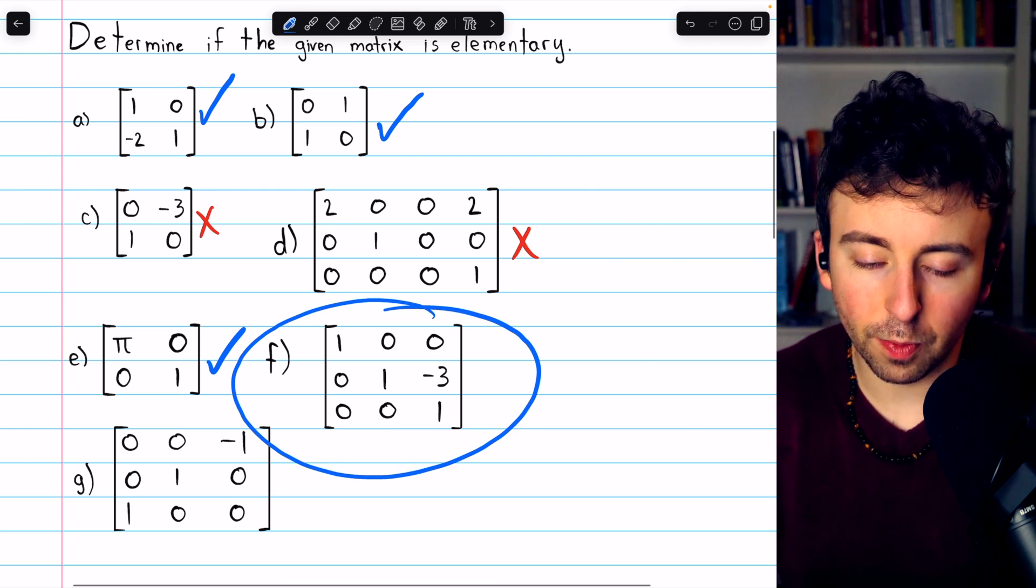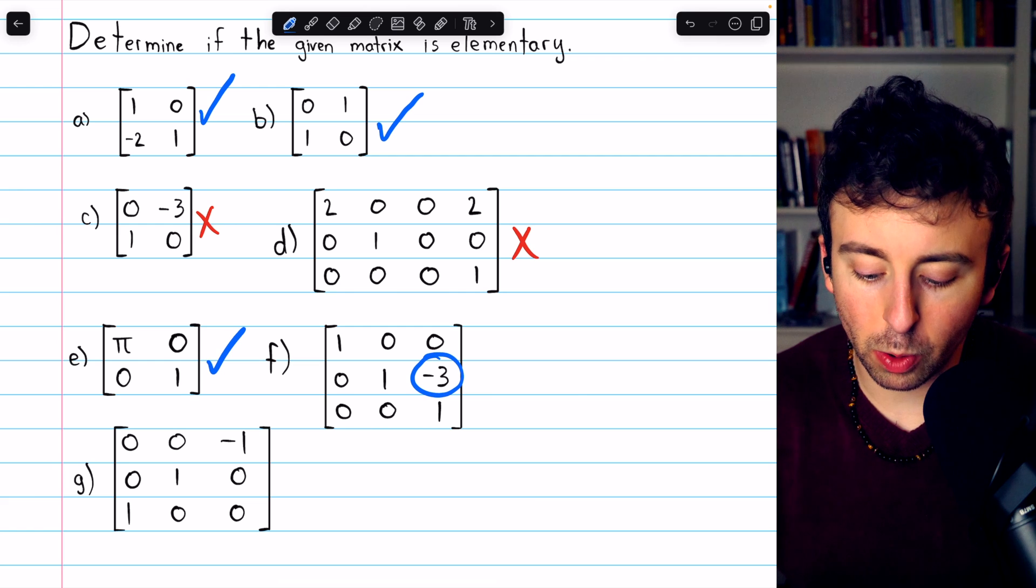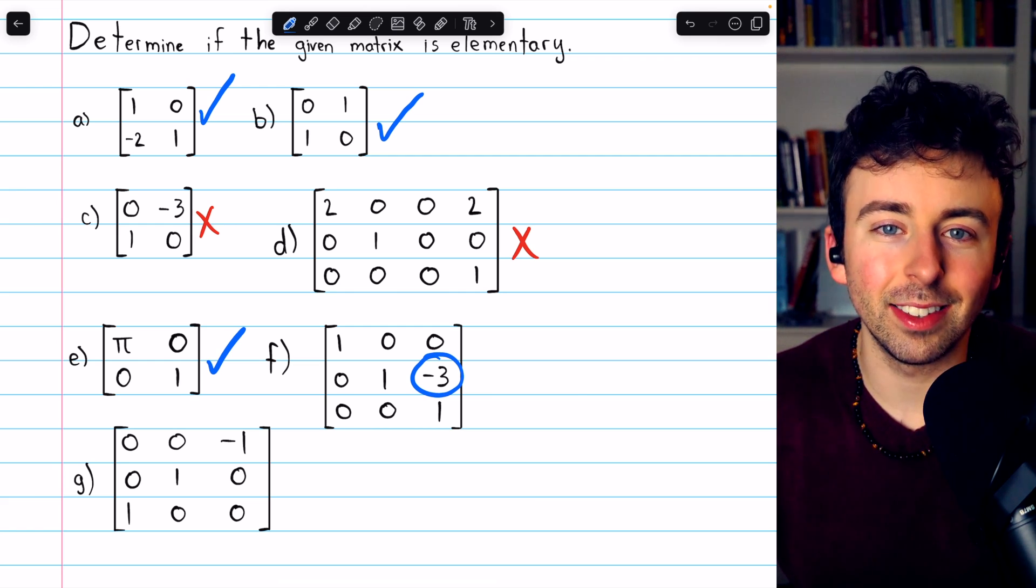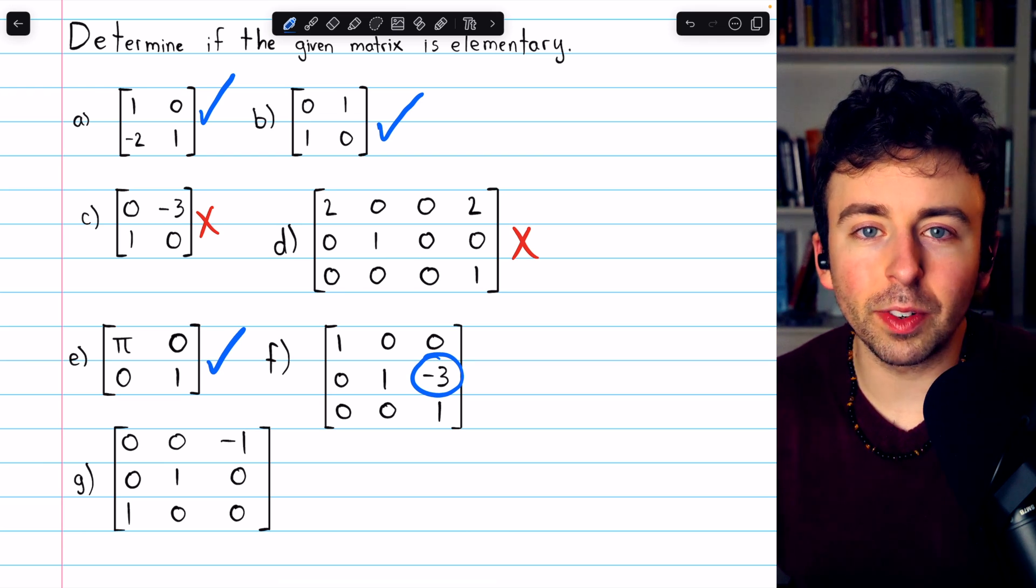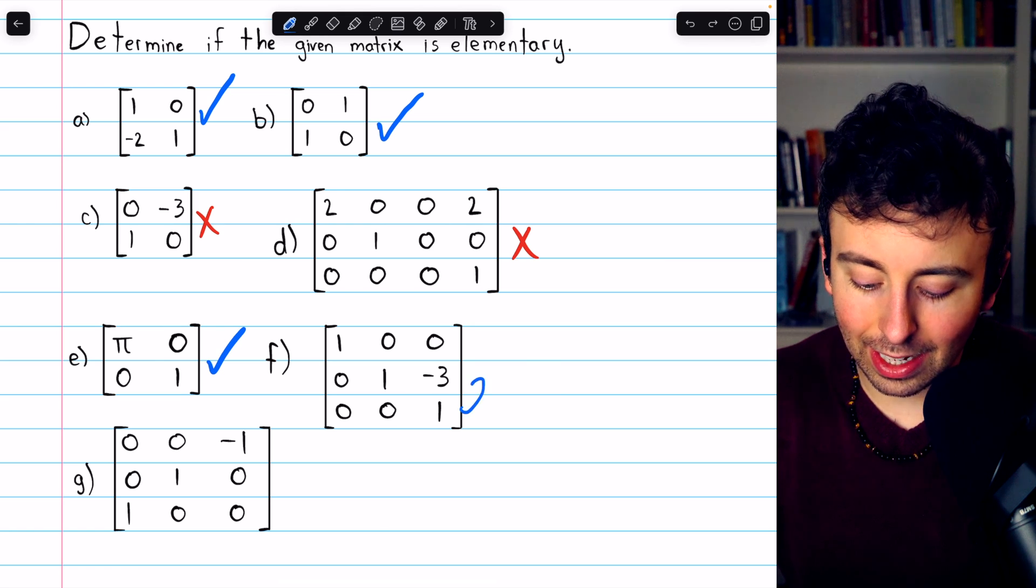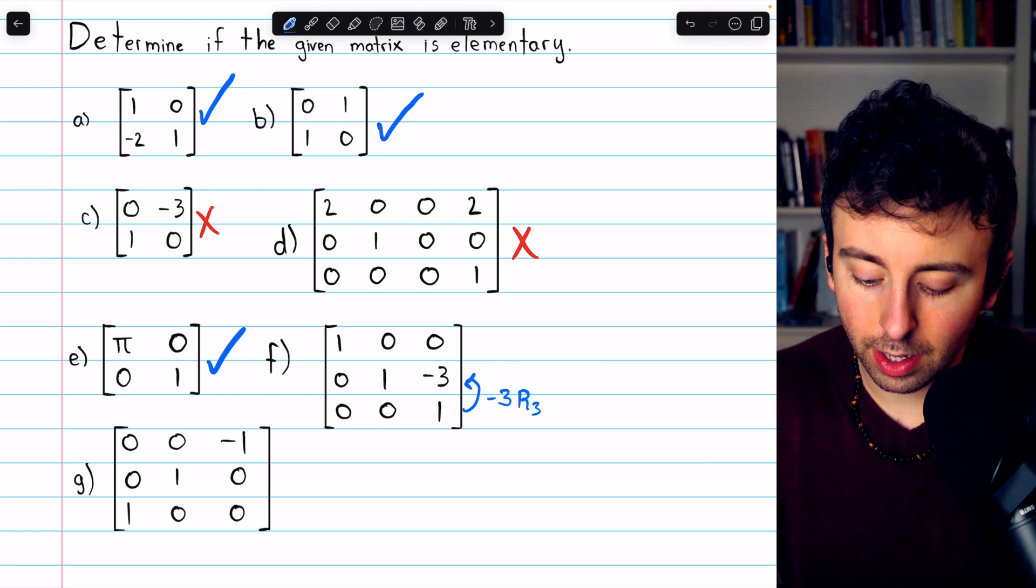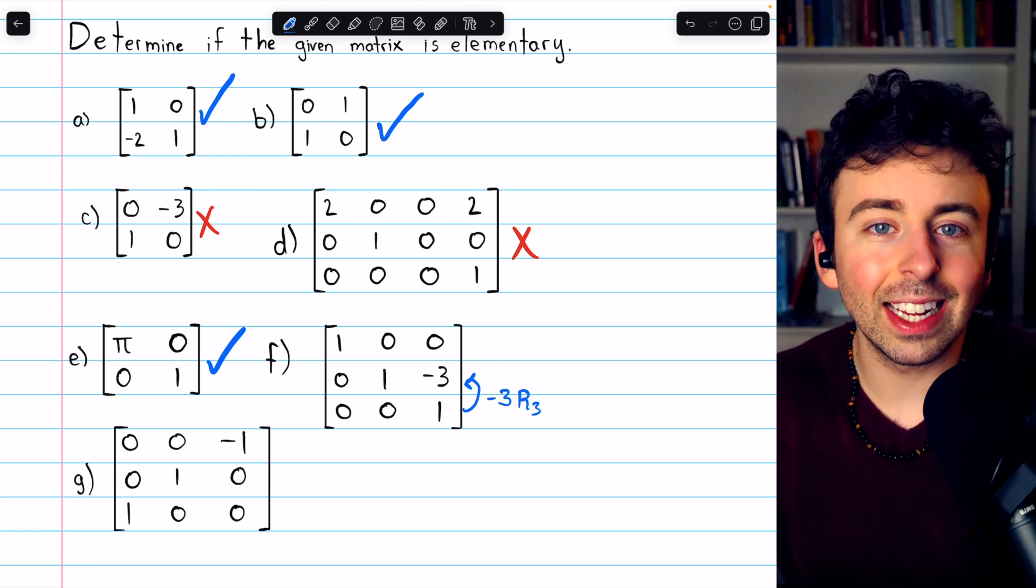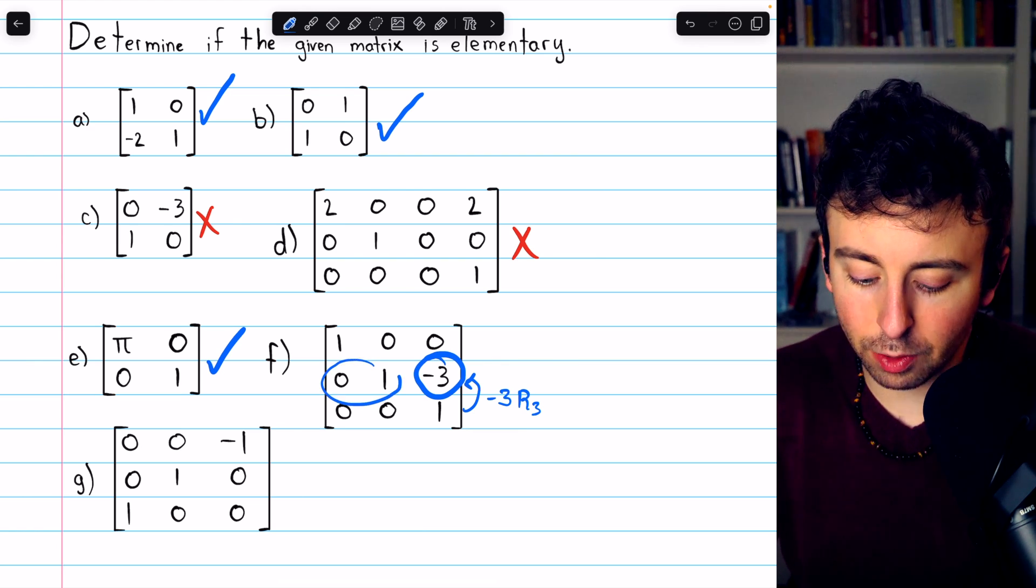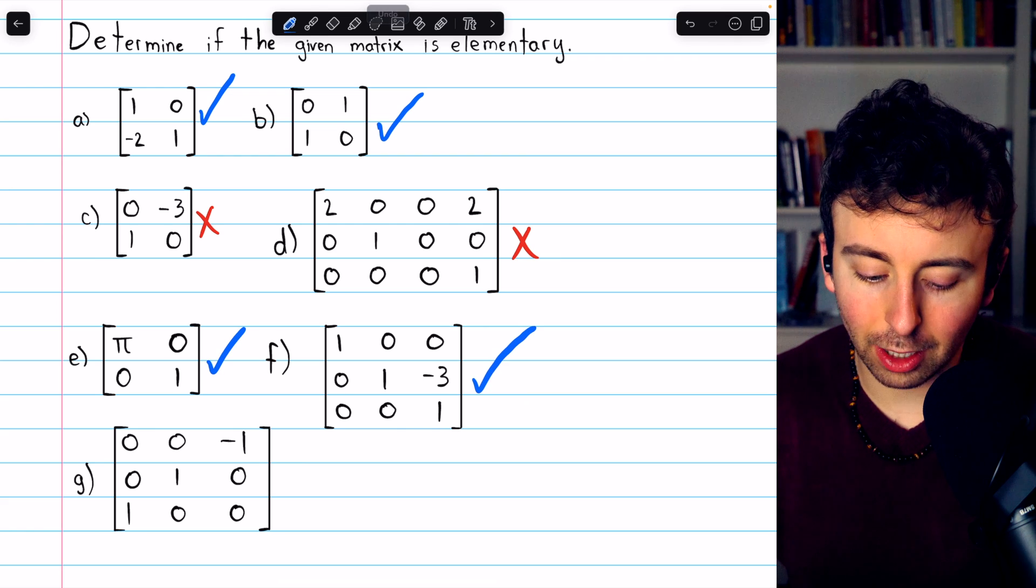Now what about matrix F? We can see the change is right here. Column 3, row 2, we have a negative 3, where in the identity matrix we would have a 0. We could have got this by a single row operation. All that needs to be done is adding negative 3 copies of row 3 to row 2. This will produce that negative 3, and the other two entries would be unchanged. So yes, this is an elementary matrix.